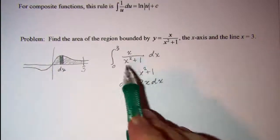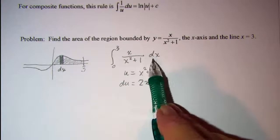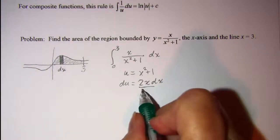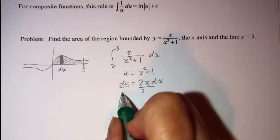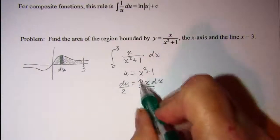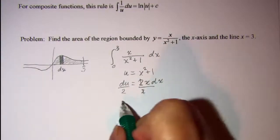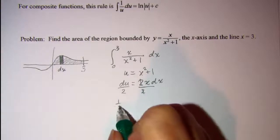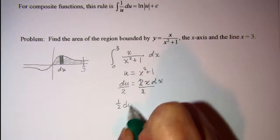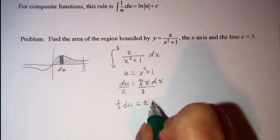My problem has the x and the dx in it. I need to get that 2 over with the du. So 1 half du equals x dx.